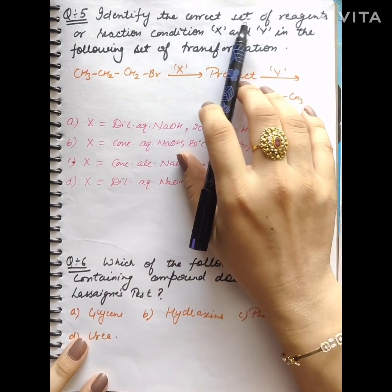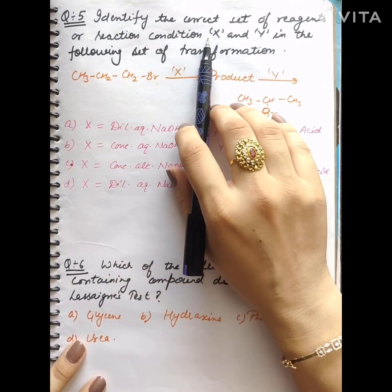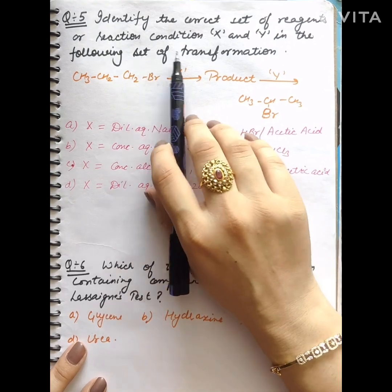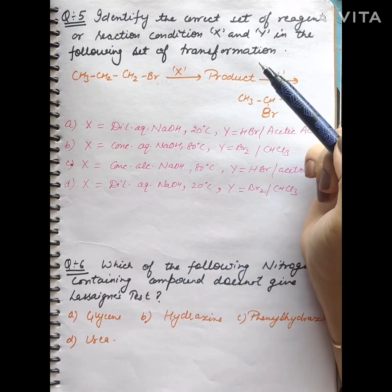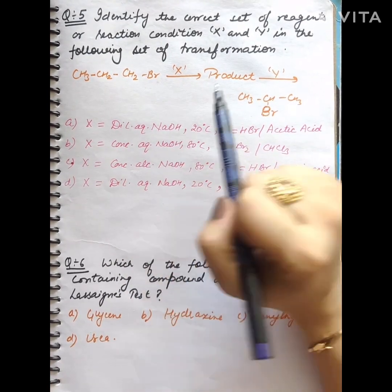Question number 5 is: identify the correct set of reagents or reaction conditions X and Y in the following set of transformation. We want to identify X and Y.